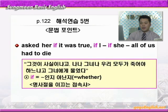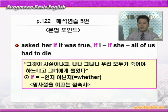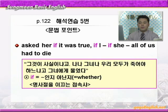바로 문법 포인트로 가겠습니다. 'asked her if it was true, if I, if she, all of us had to die' — 나나 그녀나 우리 모두가 죽어야 하느냐고 그녀에게 물었다. 여기 if는 모두 '뭐뭐인지 아닌지' 즉 whether의 의미죠. 명사절을 이끄는 접속사로, 여기 if절은 동사 ask에 대한 목적절이 되는 것입니다. her가 간접목적어, 그리고 세 개의 if절이 직접목적어가 되는 4형식 문장이 되겠어요.